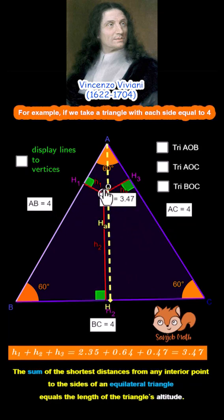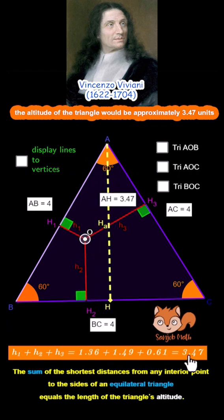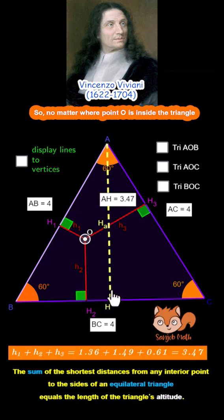For example, if we take a triangle with each side equal to 4, the altitude of the triangle would be approximately 3.47 units. So, no matter where point O is inside the triangle, the sum H1 plus H2 plus H3 equals 3.47.